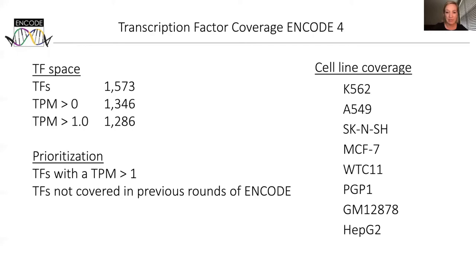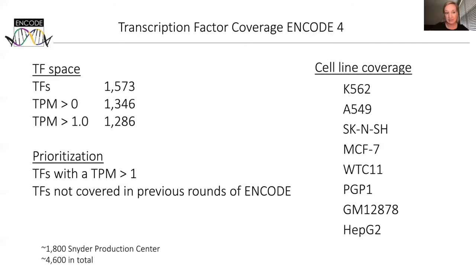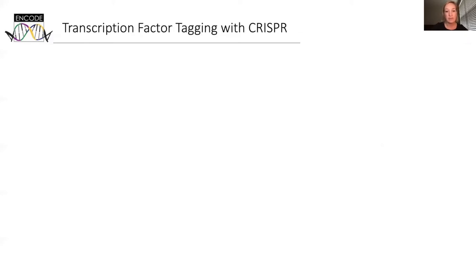This doesn't necessarily mean that experiments work best in the cell line where the transcription factor is expressed highest, so we try alternatives to provide a comprehensive map. As of now, our production center has submitted about 1800 ChIP-seq datasets that are available in this round and previous rounds of ENCODE, and there are about 4600 ChIP-seq datasets in total. The limiting factor in ChIP-seq experiments is usually the availability of highly specific antibodies — it's time consuming and expensive to create de novo antibodies and to screen commercially available antibodies for use in ChIP-seq.